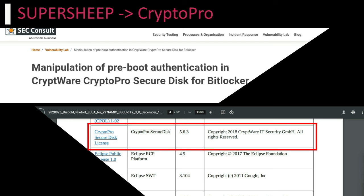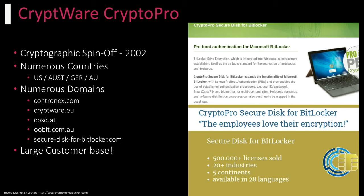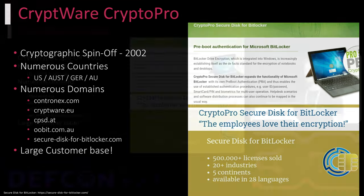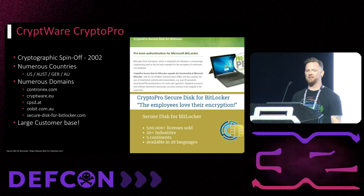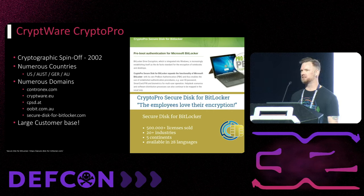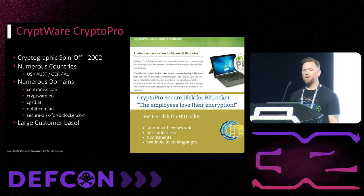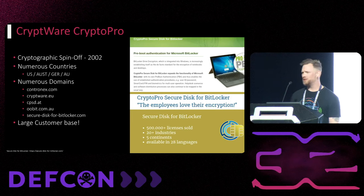Specifically, in 2016, a consulting firm known as SecConsult wrote a blog article detailing a code execution vulnerability in a piece of software known as Cryptware CryptoPro and the underlying SuperSheep Linux operating system. There were several similarities between the Vynamic Security Linux operating system and SuperSheep, leading us to look at Diebold's user license agreements — specifically identifying Cryptware CryptoPro as a third-party integrator as part of Vynamic Security. That third-party integration was only mentioned once in version 3.0; versions 4.0, 4.1, 4.2, and 4.3 all remove any reference to it. Cryptware CryptoPro is a cryptographic spinoff started in 2002 with the objective of enhancing Microsoft BitLocker functionality, specifically by introducing a pre-boot authentication process.